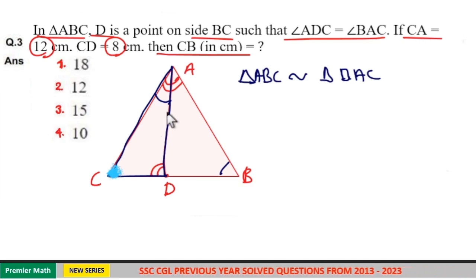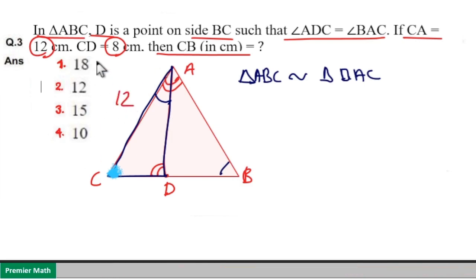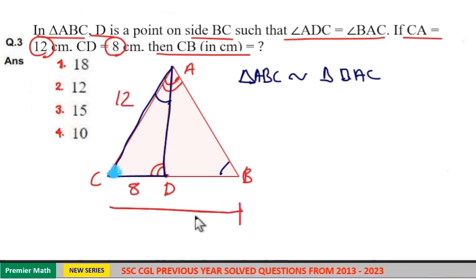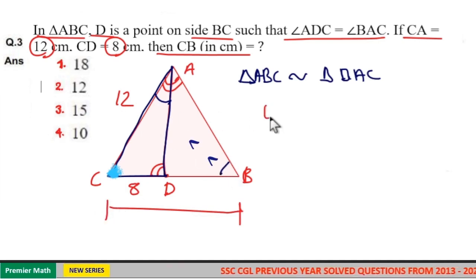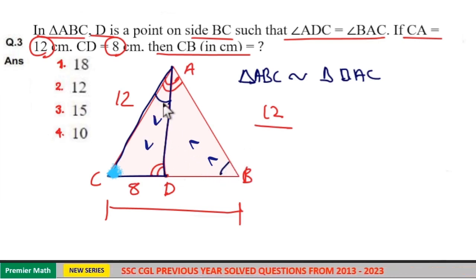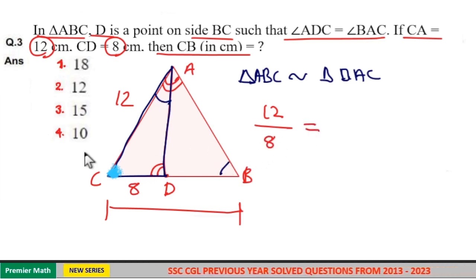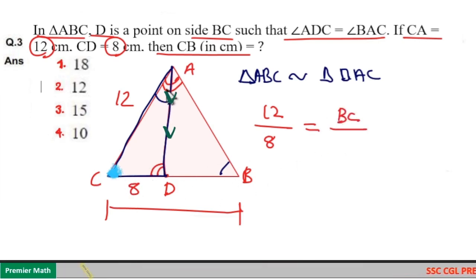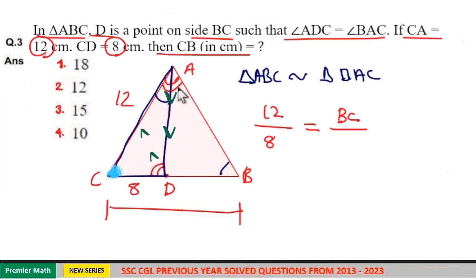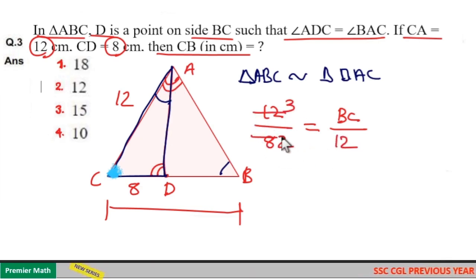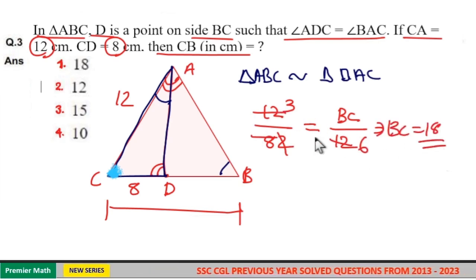When two triangles are similar, ratio of corresponding sides are equal. Here AC equals 12 and CD equals 8. We need BC. Side opposite to B is 12 in the larger triangle; the angle equal to angle B in smaller triangle gives opposite side 8. BC is opposite to angle A; angle equal to angle A in smaller triangle gives opposite side 12. So 12 by 8 equals BC by 12. That gives BC equals 12 into 12 divided by 8 equals 18. Option 1 is your answer.